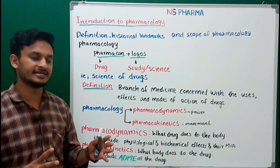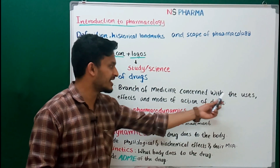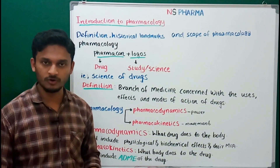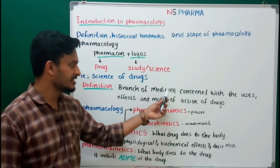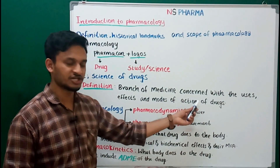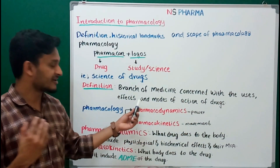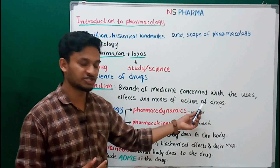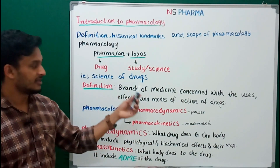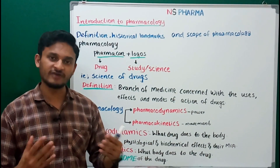The exact definition of pharmacology is: it is the branch of medicine which is concerned with the uses, effects, and modes of action of drugs. It is concerned with three main points — the uses of the drugs, effects of the drug, and modes of action of the drugs.